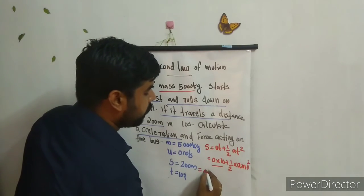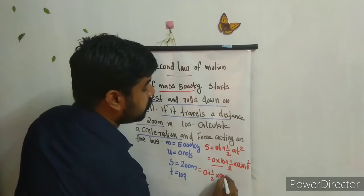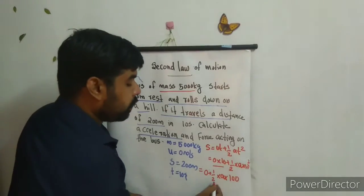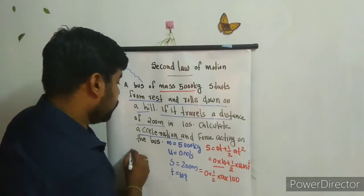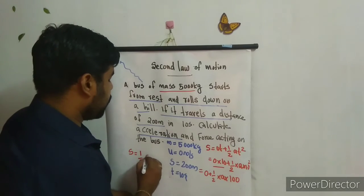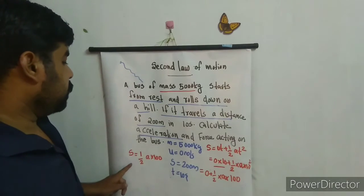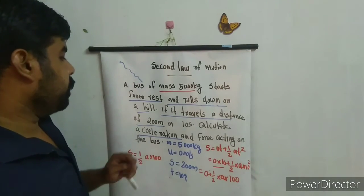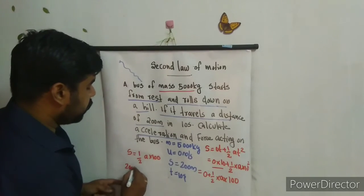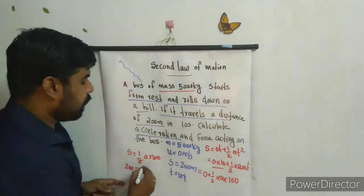Substituting the values: 200 equals zero times 10 plus half into a into 10 squared. Zero into 10 is zero. 10 squared is 100. So 200 equals half into a into 100, which simplifies to 200 equals 50a. Therefore a equals 200 by 50, which gives a equals 4 meter per second square.